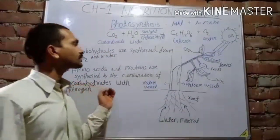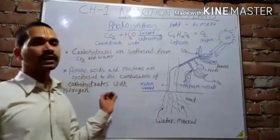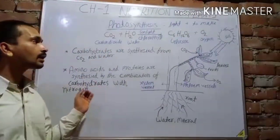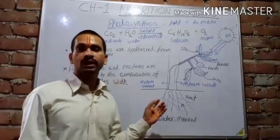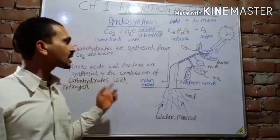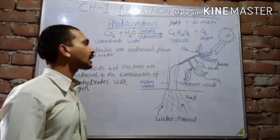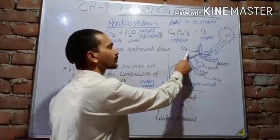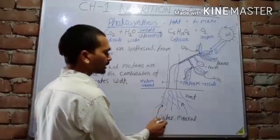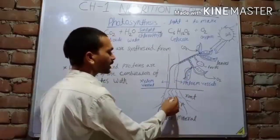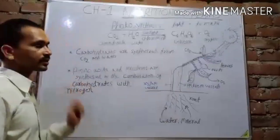Photosynthesis is a process by which green plants make their food in the presence of sunlight, taking carbon dioxide from the atmosphere and water and minerals from the soil.